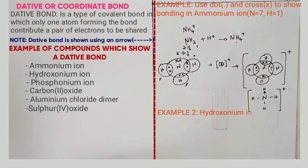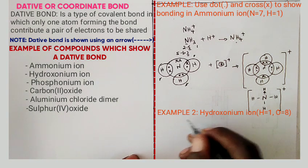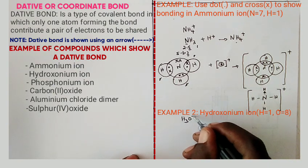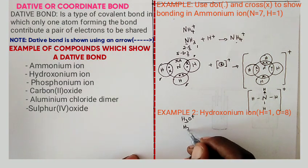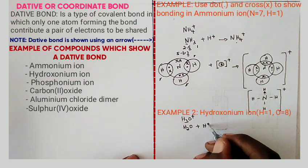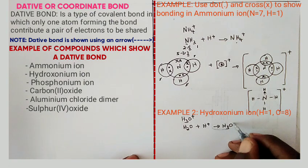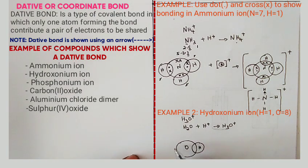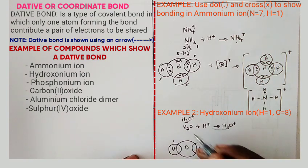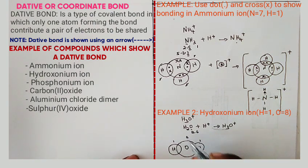Example number two: use dot and cross to show bonding in the hydroxonium ion, H₃O⁺. This ion is formed from a water molecule plus a hydrogen ion. First, draw the water molecule with oxygen at the center and hydrogen at each end. Place one electron for each hydrogen and six electrons for oxygen. For oxygen to attain stability, subtract two, leaving four electrons placed inside the oxygen circle.